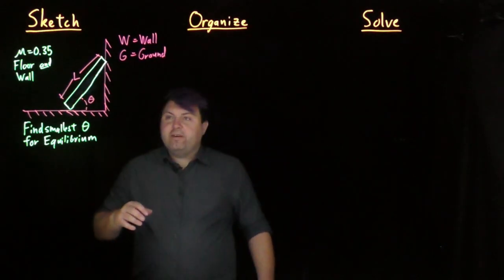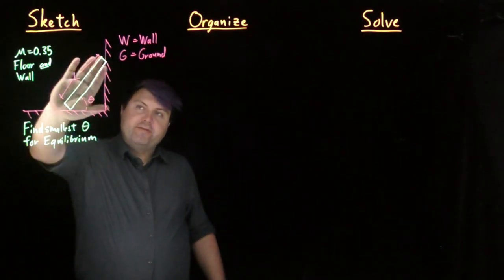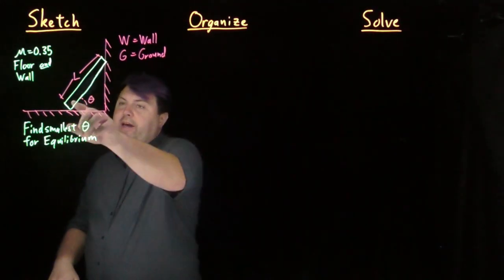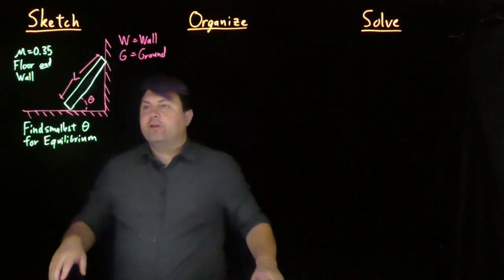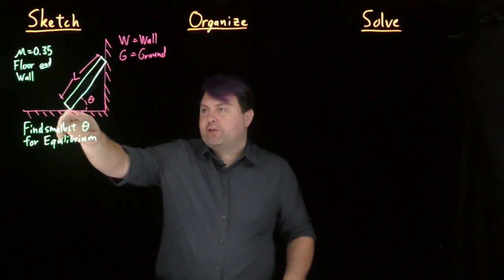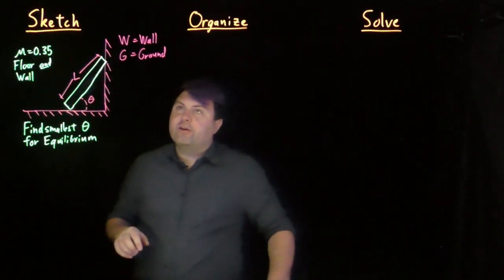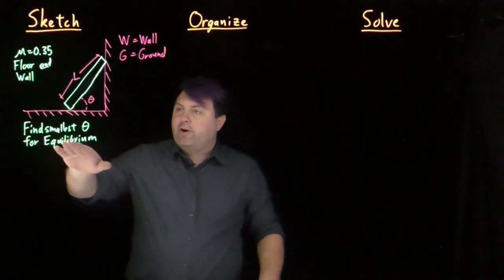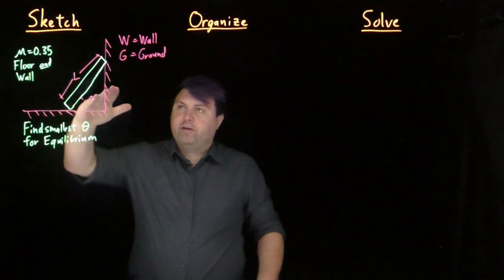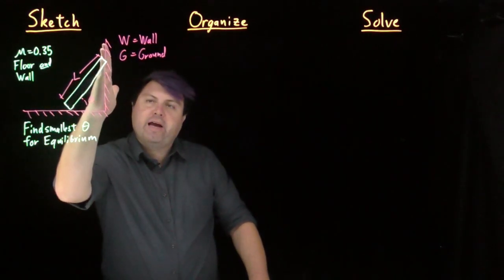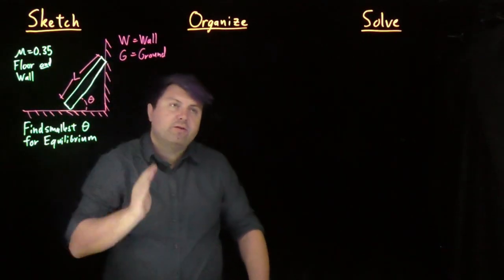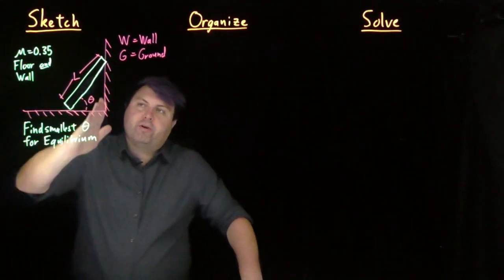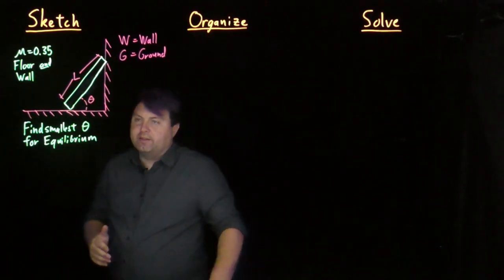Welcome. We have here a leaning ladder problem, which we might have seen in other videos from other sources. In those, they only have one coefficient of friction. We're going to look at it with a coefficient of friction both on the ground and on the wall. We'll call anything with the wall 'w' and anything with the ground 'g'. We want to find the smallest theta for equilibrium — if it's nearly vertical it's very stable, but if it's nearly horizontal it will quickly slide down.